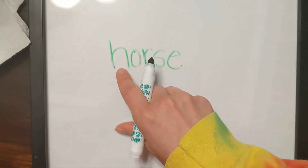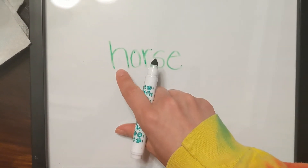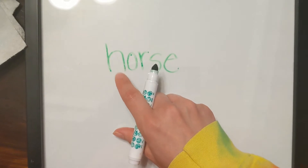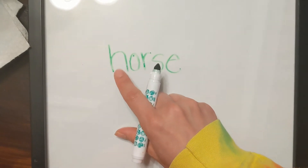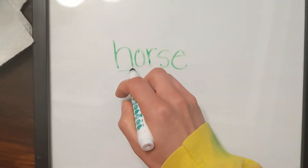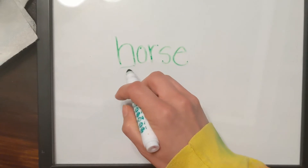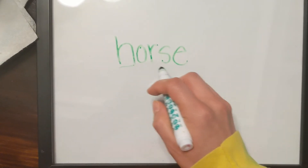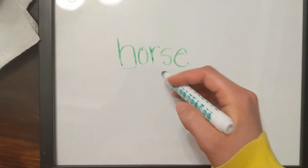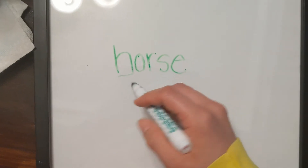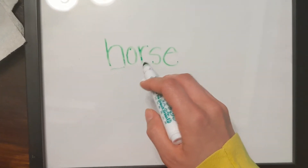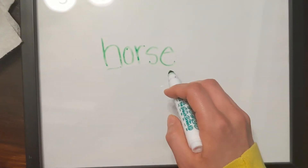When we look at the word horse, we look at the first letter. It starts with a 'huh' sound, and that letter that makes a 'huh' sound is H. You may want to use some of these letters in your writing: H, O, R, S, E.